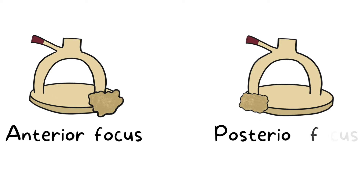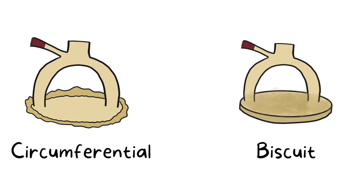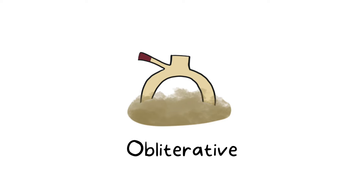The first type is called the anterior focus, where the lesion occurs in front of the oval window called fissula ante-fenestram, which is a very common focus for otosclerosis to occur. Next we have the posterior focus type, where it occurs behind the oval window. When it occurs circumferentially around the margin of the stapes, it is called the circumferential type. If it occurs on the footplate leaving the annular ligament free, it is called the biscuit type. When the oval window region is completely obliterated, it is called the obliterative type.